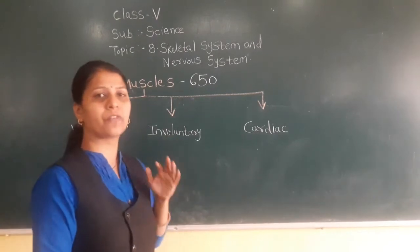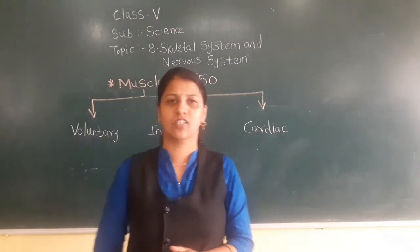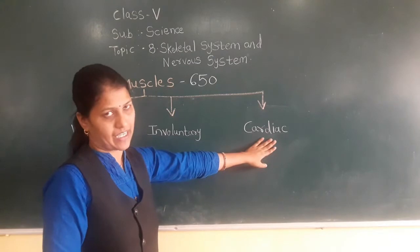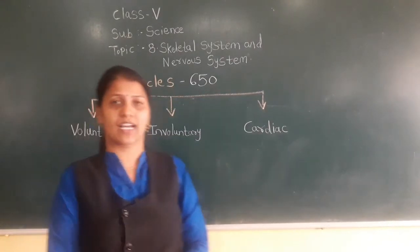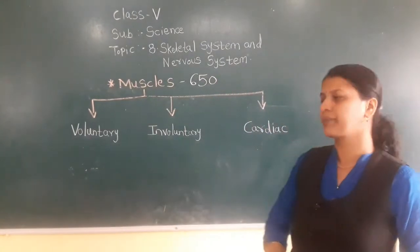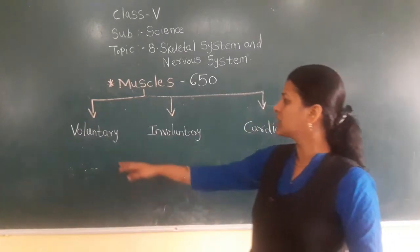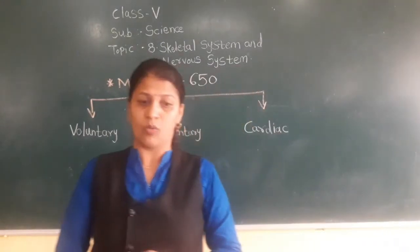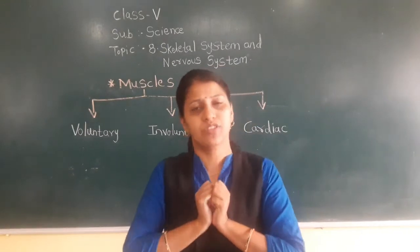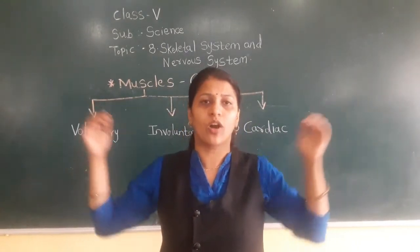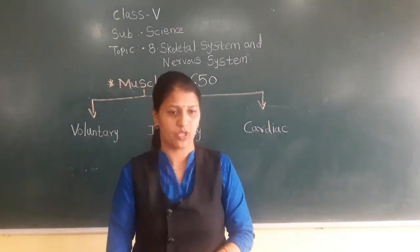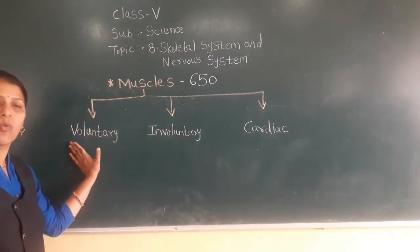According to their function and structure, muscles are classified into three types: voluntary, involuntary, and cardiac. The first is voluntary muscles — they are under our control. For example, if I want to stretch my arm I can stretch it, and if I want to contract my arm I can contract it. Such muscles are called voluntary muscles.